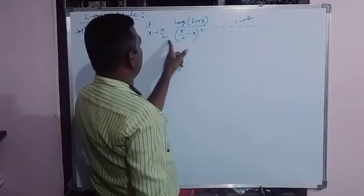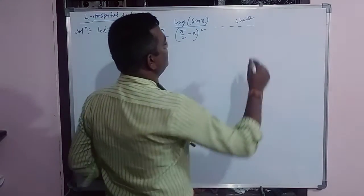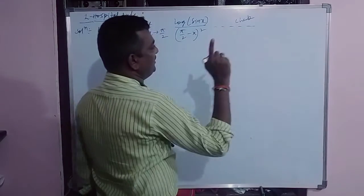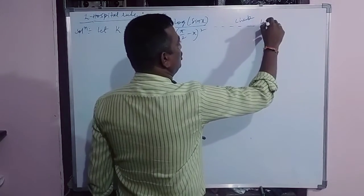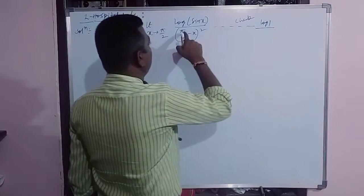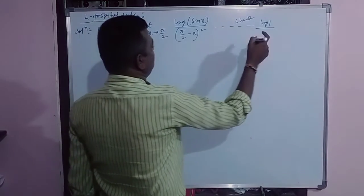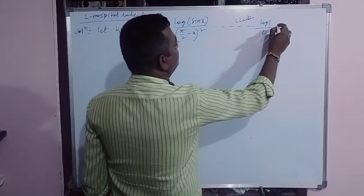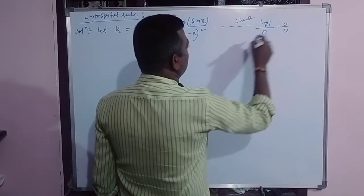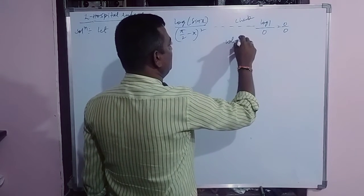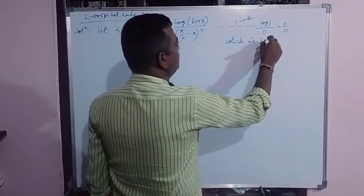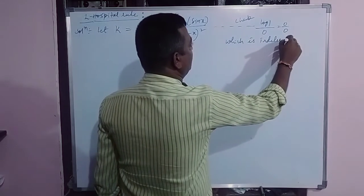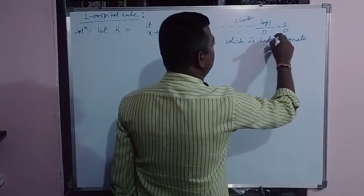By substitution of x equal to pi by 2, log of sin pi by 2, sin pi by 2 is 1, you will get log 1 divided by pi by 2 minus pi by 2 is 0. Log 1 is 0, 0 by 0. So what is your conclusion? Which is indeterminate form.